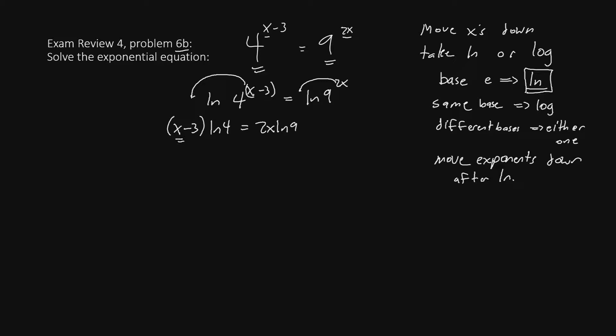Now, we still have an x stuck in parentheses. So we distribute in order to get x out of the parentheses. We're going to multiply ln 4 times both of these numbers, giving us x ln 4 minus 3 ln 4 equals 2x ln 9.